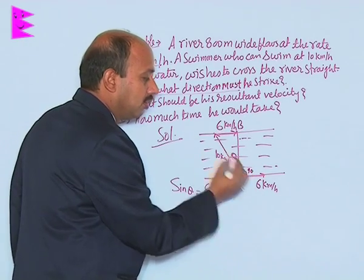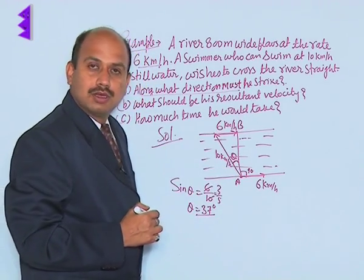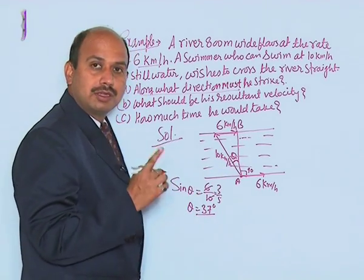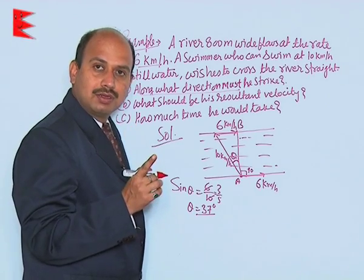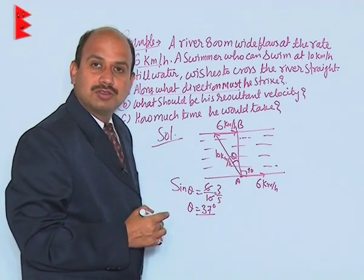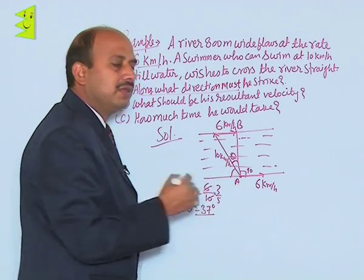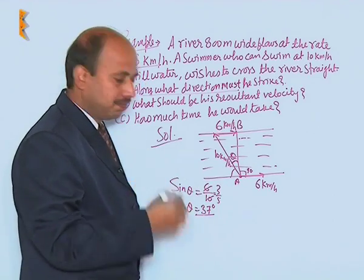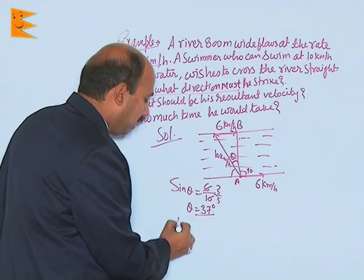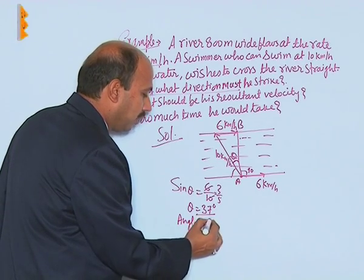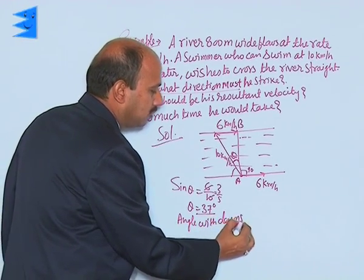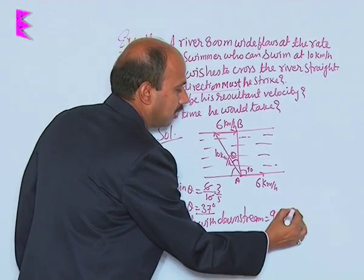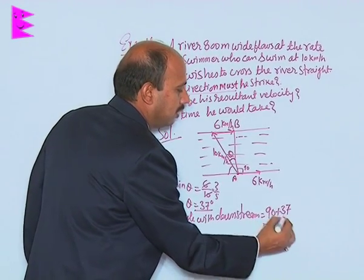This 90 degree angle is here. So, 90 plus 37, so man should swim 90 plus 37 that means 127 degree with the downstream. But if you see this angle that will be 53 degree, so with the upstream he must swim at the angle of 53. So, angle with downstream we can write is equal to 90 plus 37 that is 127 degree.